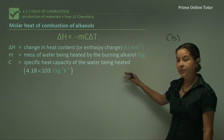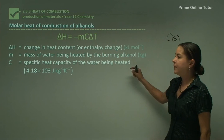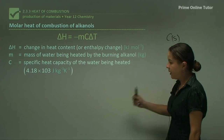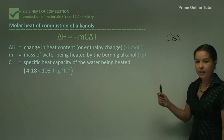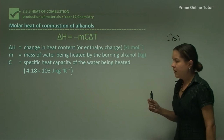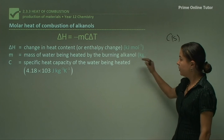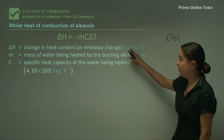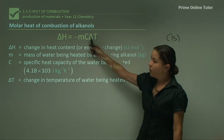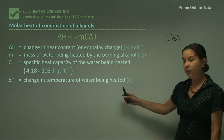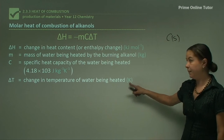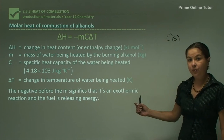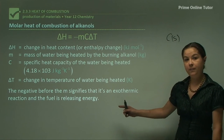C is a constant — the specific heat capacity of the water, which is 4.18 × 10³ joules per kilogram per kelvin. Kelvin is another unit for temperature instead of degrees Celsius, and we always use kelvin here — capital K for kelvin, small k for kilo as in kilojoule. Delta T is the change in temperature of the water being heated, measured in kelvin. The negative sign before M signifies that it's an exothermic reaction — the fuel is releasing energy and heat is being produced.